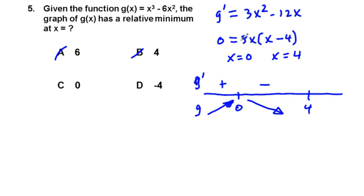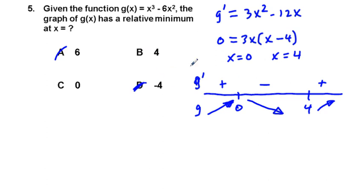Picking x = 5 (greater than 4): positive times positive, so increasing again. That confirms our relative minimum is at x = 4. I originally crossed out the wrong answer — easy to correct with proper analysis. So the relative minimum is at x = 4.